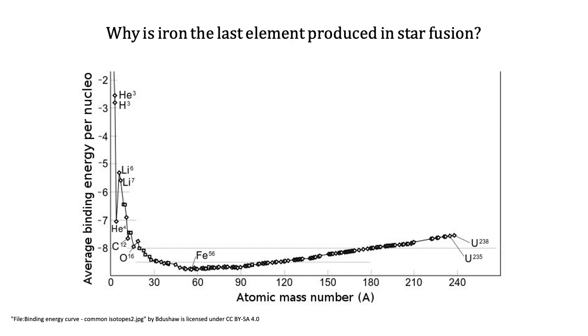However, nuclear fusion usually stops at iron. This is because iron is a unique element. It is extremely stable. The reaction to fuse iron into another heavier element will only take away energy from its environment. It is endothermic. This is also the reason why in this graph, after iron, the average binding energy per nucleon starts to increase again.